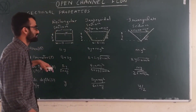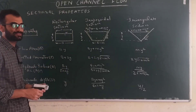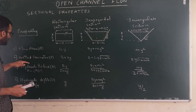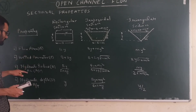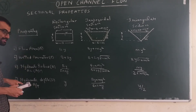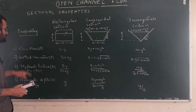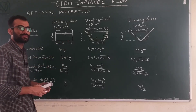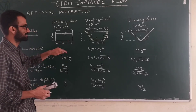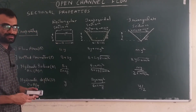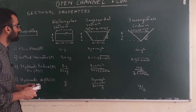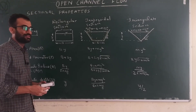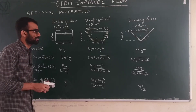These are the various sectional properties of open channel flow: flow area, wetted perimeter, hydraulic radius, and hydraulic mean depth. Once you can calculate these properties for simple sections, you can apply the same approach to complex sections and solve open channel flow problems. Thank you.